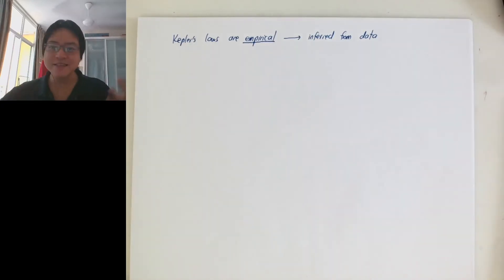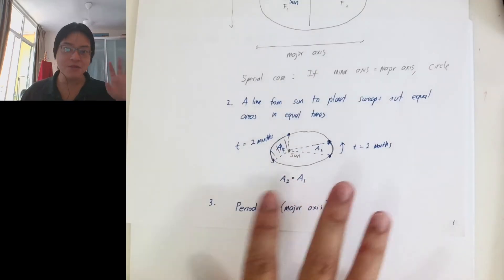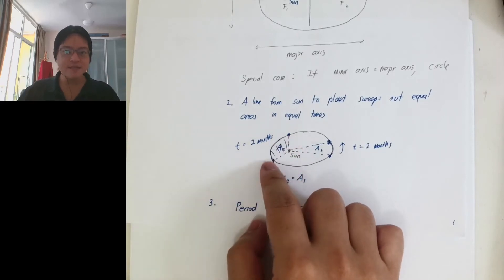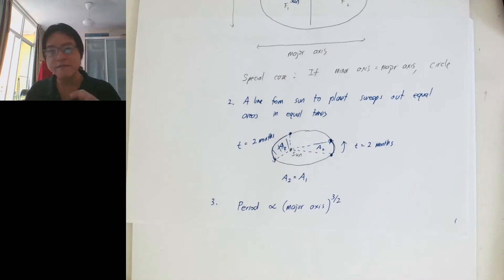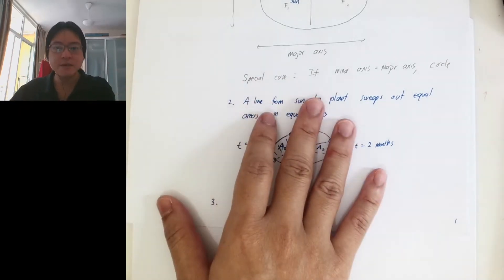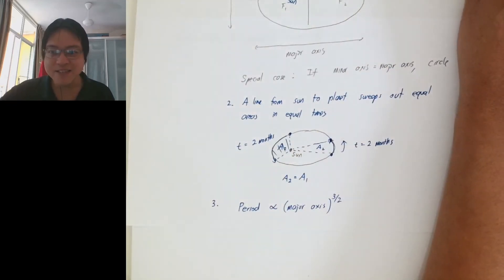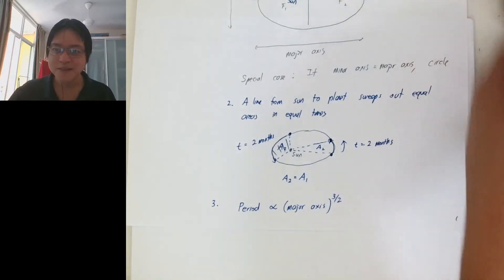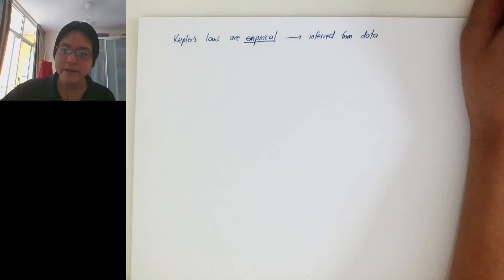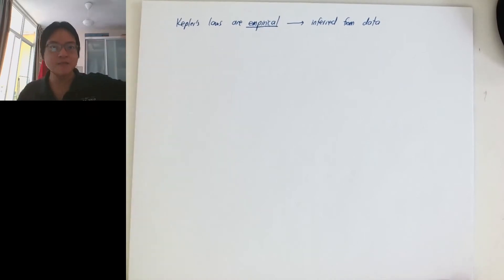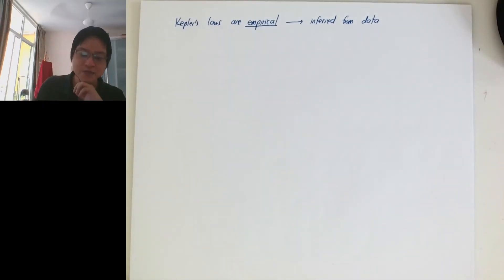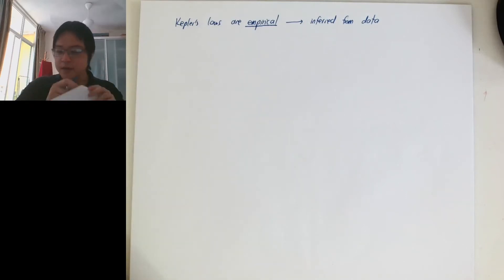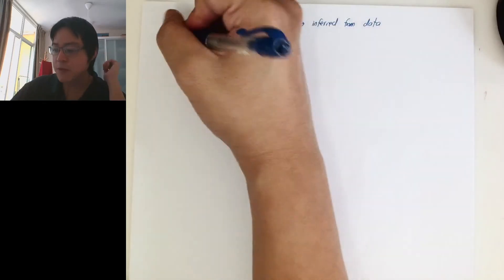Why does A2 equal A1? We don't know why yet — Kepler also didn't know why. He just looked at the data and observed that after two months on one side, this is the area, and on the other side after two months it's also the same area. This is what we want to explore in this chapter. The equation of the ellipse — we probably won't be using it; it will be in an optional part because there's a lot of complicated math to derive from Newton's law to the equation of the ellipse. Kepler's laws are empirical, so what we want is a theory — Newton's law of gravity.